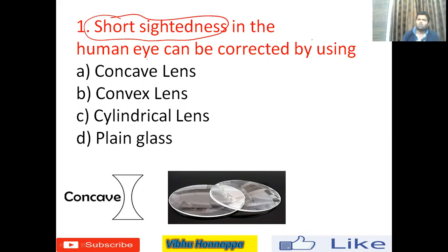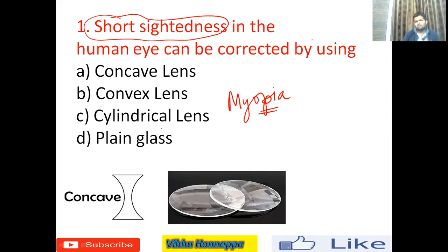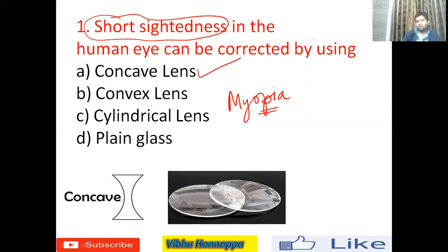Short-sightedness is one of the common human eye defects. Its scientific name is myopia. A person with short-sightedness can see things closer to them but cannot see things far away — for example, something written on a blackboard cannot be seen, but text in a textbook can be read. This eye defect can be corrected by using a concave lens.